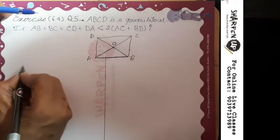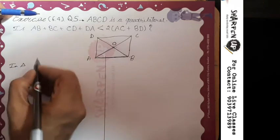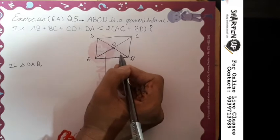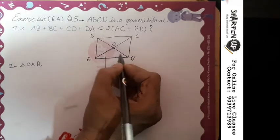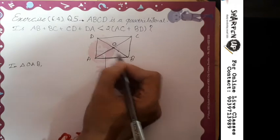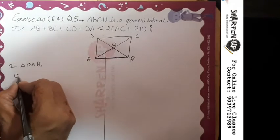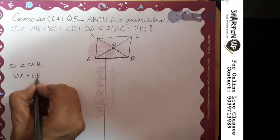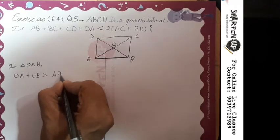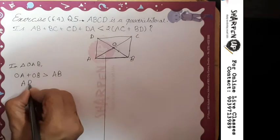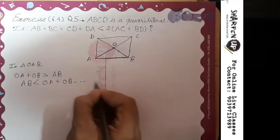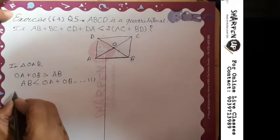In triangle OAB, applying triangle inequality, the sum of two sides OA plus OB is greater than third side AB. So we can also write AB is less than OA plus OB. Let's name this our first expression.